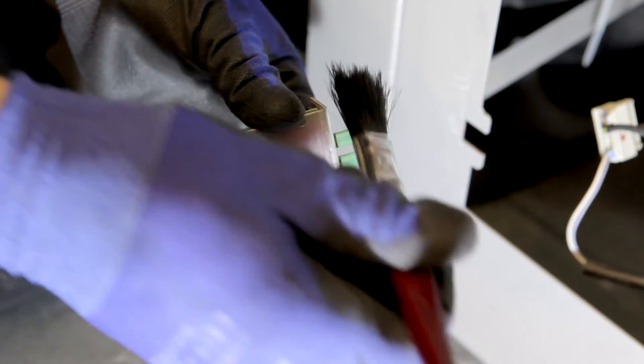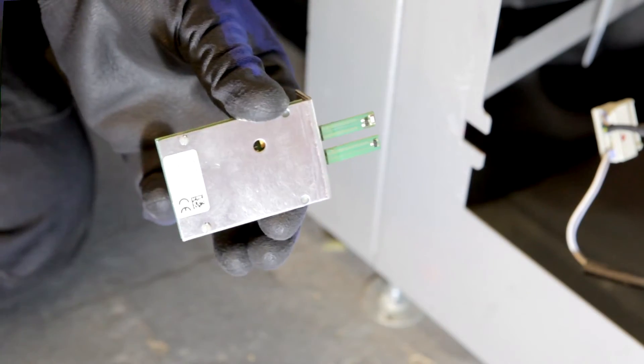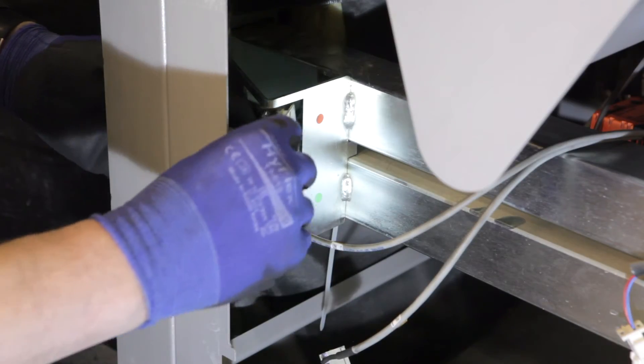With the sensor removed, use a fine bristled brush to gently remove any dust. Then replace the sensor and secure with a new cable tie.